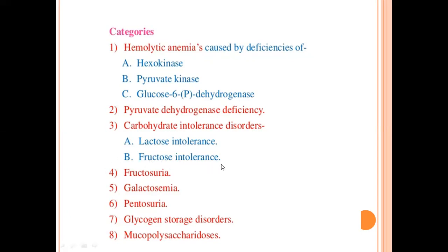In number B, Fructose Intolerance — here our enterocytes, the cells of our intestine, are not able to break down fructose. Therefore fructose cannot be digested, and nausea, vomiting, diarrhea, and gas are produced. Fourth, we can see fructose in the urine — fructosuria — which is due to the deficiency of hepatic fructokinase.